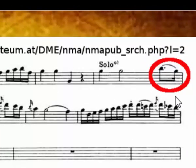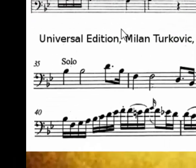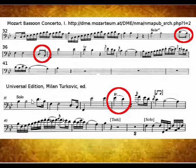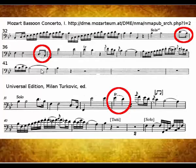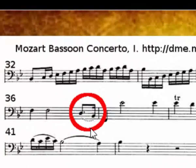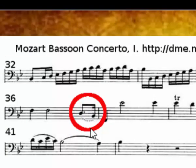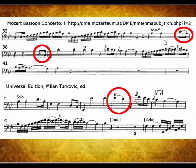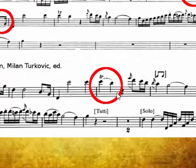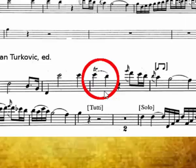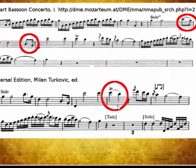In the NMA edition, there is a slur in measure 35 that is not contained in the Universal edition. In the NMA edition in measure 36, the slur is recommended by the editor. Since this is a repetition of the earlier measure, it makes perfect sense to add it. Milan Turkovich, the editor of the Universal edition, recommends adding a slur in measure 38. Slurring trills into the following note is typical for classical music and this is an excellent recommendation.